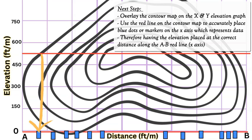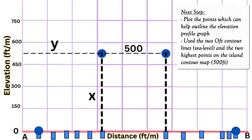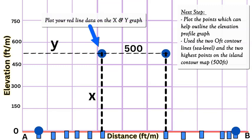Once I have my X axis, which is distance, and I have my blue rectangles indicating where the contour lines cross over the red line, and also my Y axis with elevation, I can then plot my X and Y graph to show accurately my island in a side view or profile.